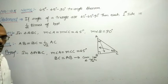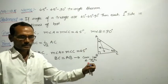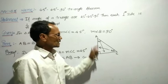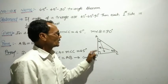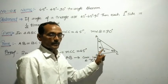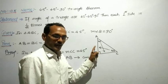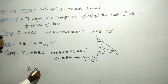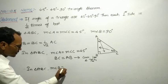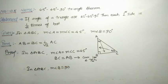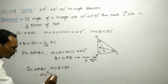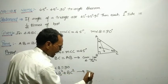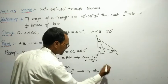Now, by using the Pythagorean theorem: in a right angle triangle, the square of the hypotenuse equals the sum of the squares of the remaining sides. In triangle ABC, measure of angle B equals 90 degrees. Therefore, AC squared equals AB squared plus BC squared. The reason is the Pythagorean theorem.